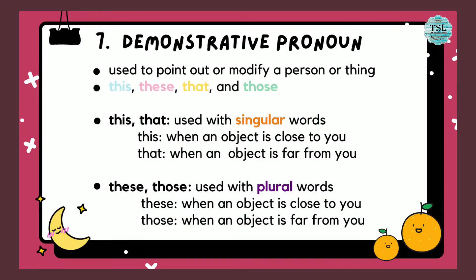Next is demonstrative pronoun. Demonstrative pronoun is used to point out or modify a person or thing. There are four demonstrative pronouns which are this, these, that and those. This and that are used with singular words. This is used when the object is close to you, while that is far away from you. These and those are used with plural words. If objects are close to you, you use these. But if they are away from you, you use those.